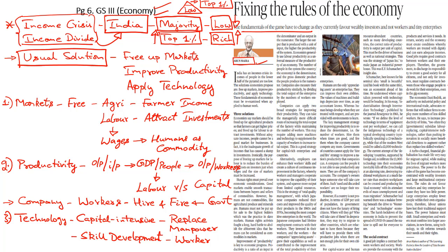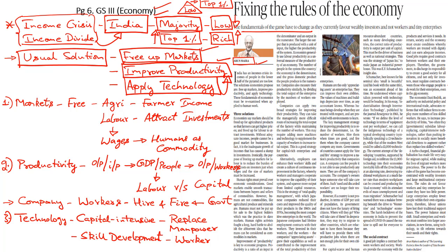This essentially is a representation of the stark income divide in the country. A majority of the population has very low incomes, whereas a small percentage at the top of the pyramid are the ultra-rich who essentially control the factors of production and the markets. To address this challenge, economists have generally suggested three solutions: one is to free up the markets from excessive government regulation; two, to focus on improving productivity in the industry and the overall economy; and three, to introduce technology so that productivity can be ramped up and a level playing field can be created.